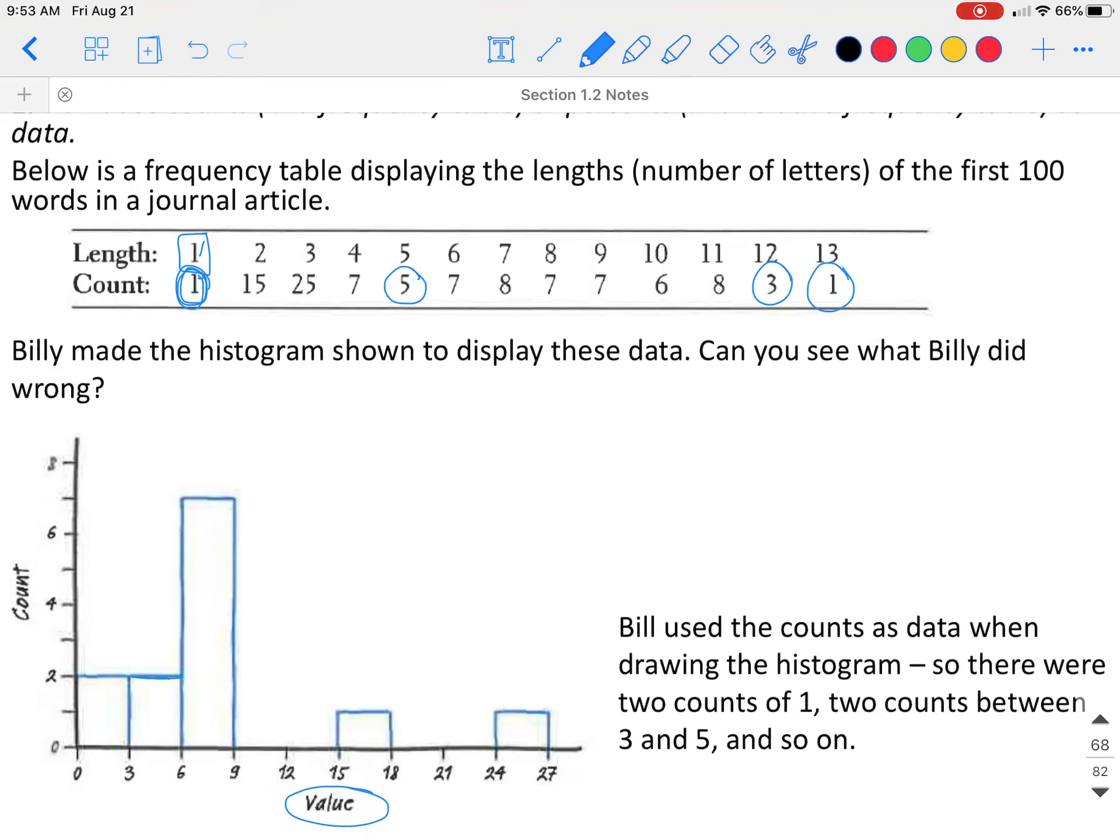They were using the counts instead of the lengths. How they should have broken it up is if they wanted to go widths of two, they should do one to two. There were a total of 16. So from one to two, there should be a bar of a height of 16. From three to four, there should be a bar that has a height of 32.